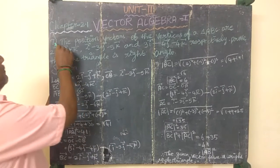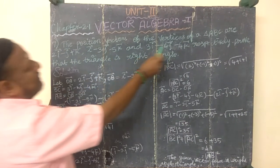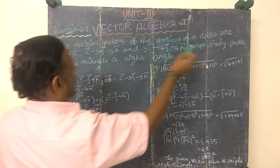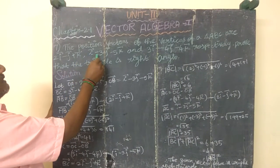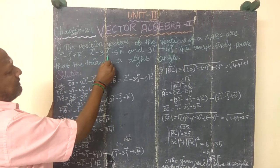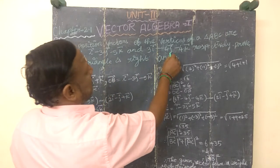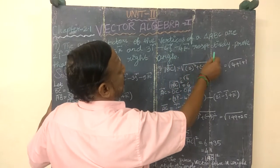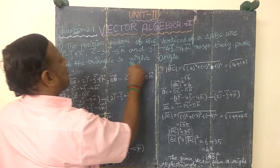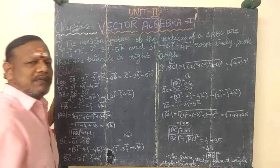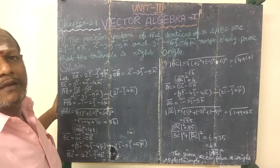Good morning friends. The position vectors of the vertices of triangle ABC are 2i minus j plus k vector, i minus 3j minus 5k vector, and 3i minus 4j minus 4k vector. Prove that the triangle is a right-angled isosceles triangle.